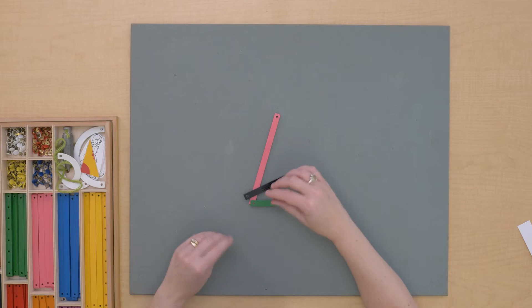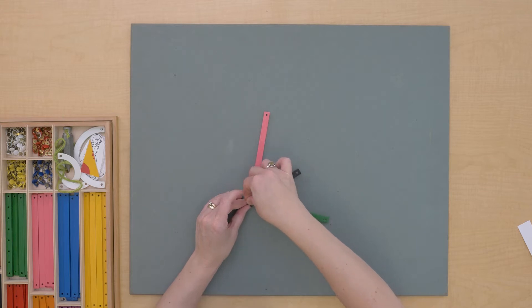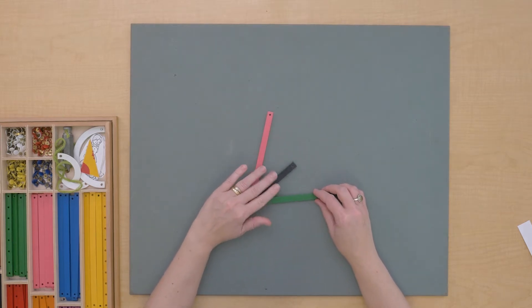With these three sticks, I can make two angles. Watch. See, I have two angles here.